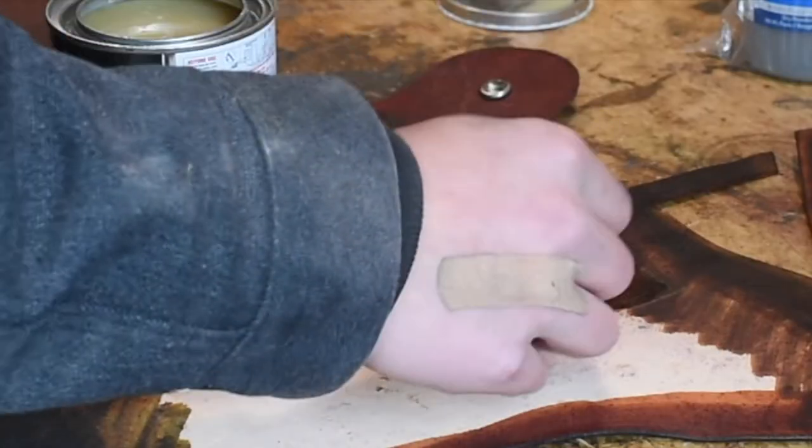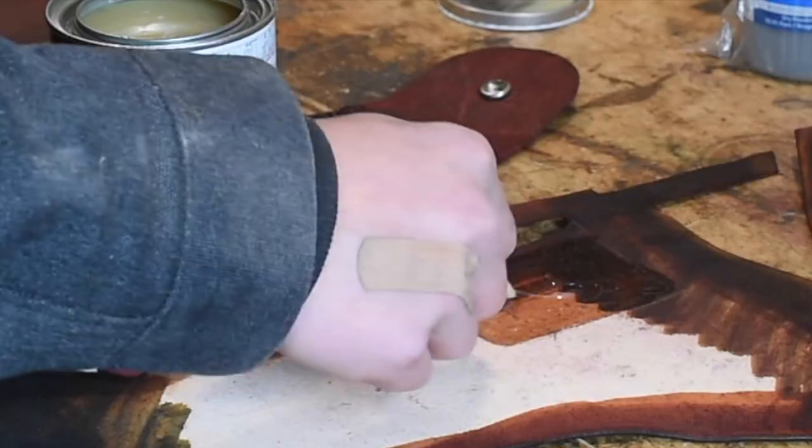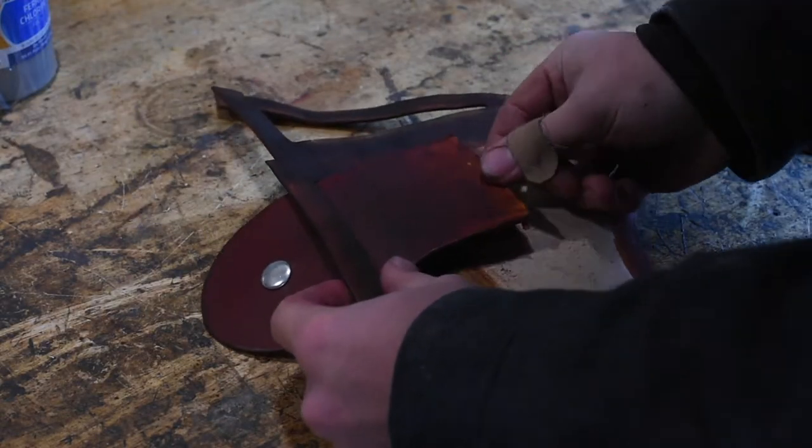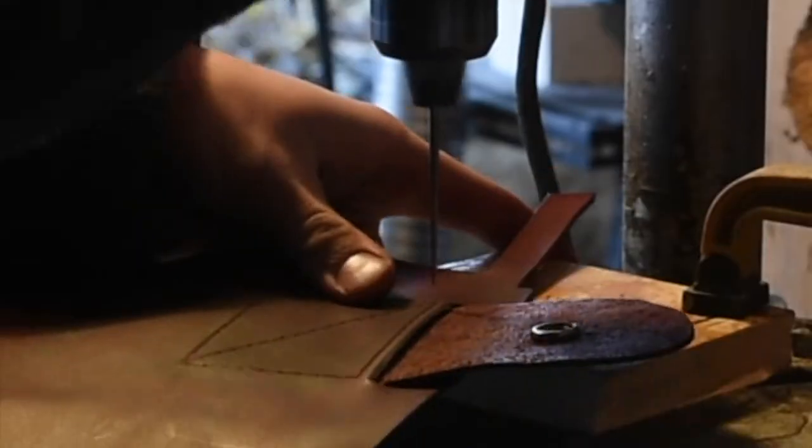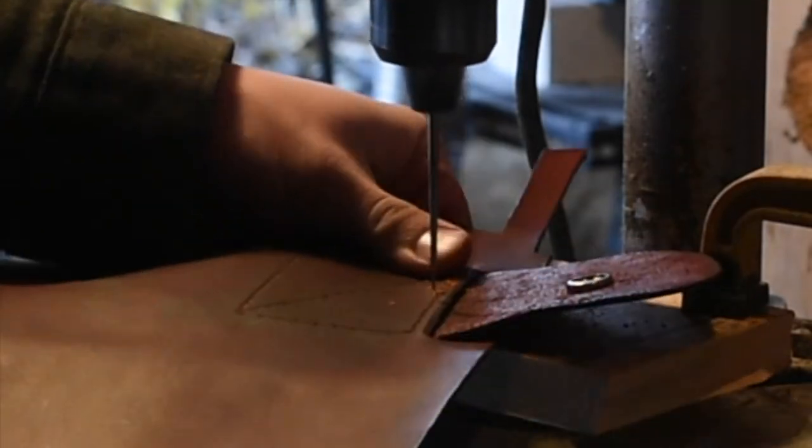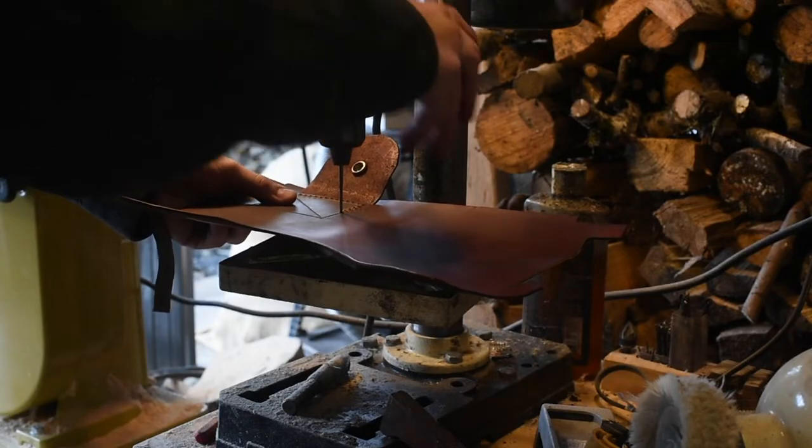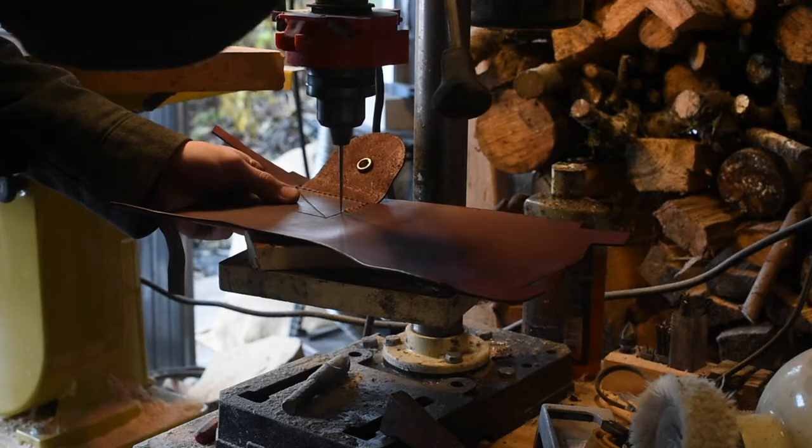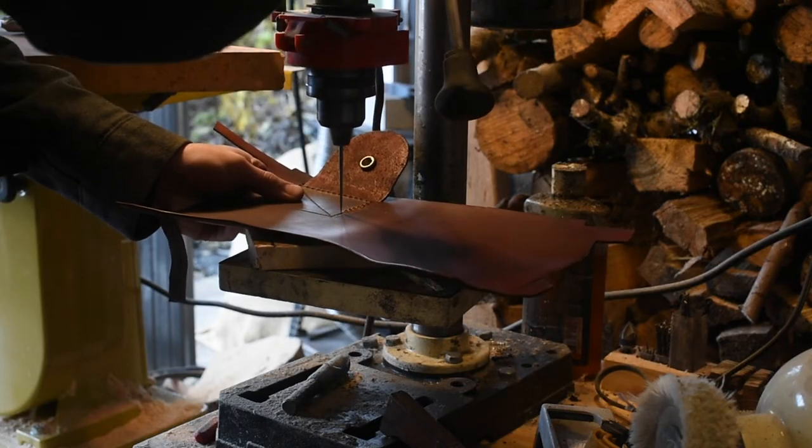I'm just going to use this contact cement to stick this flap into place. Once we've got that flap glued in place, I'm going to go to the drill press and punch out some holes so that I can stitch through them, so that that flap is very securely sewn on there, not just held in by glue.